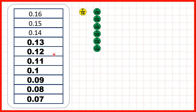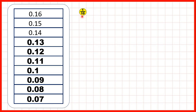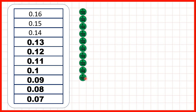So let's think about this question and let's show place value counters so that we can understand what's happening. We start with 0.16, so that's one-tenth and six-hundredths. We're taking away one-hundredth each time, so then we get to 0.1 or one-tenth. But to keep on counting back in hundredths, we need to exchange our tenth for ten-hundredths, and then we can continue counting back until we get to 0.07 or seven-hundredths.